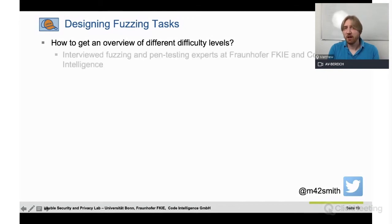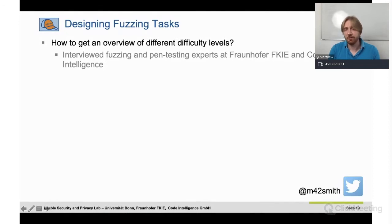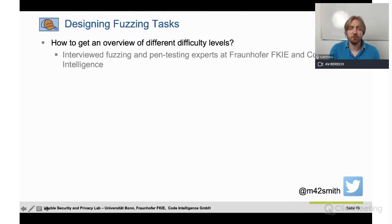What we then did is interviewed fuzzing and pen-testing experts at Fraunhofer FKIE and Code Intelligence, asking analysts who use fuzzing every day to give us examples of open source projects they found really easy to use fuzzing on and ones which were more challenging.